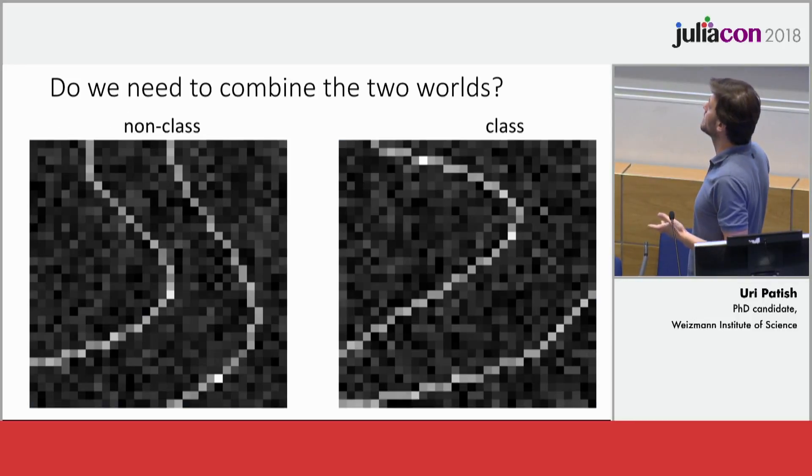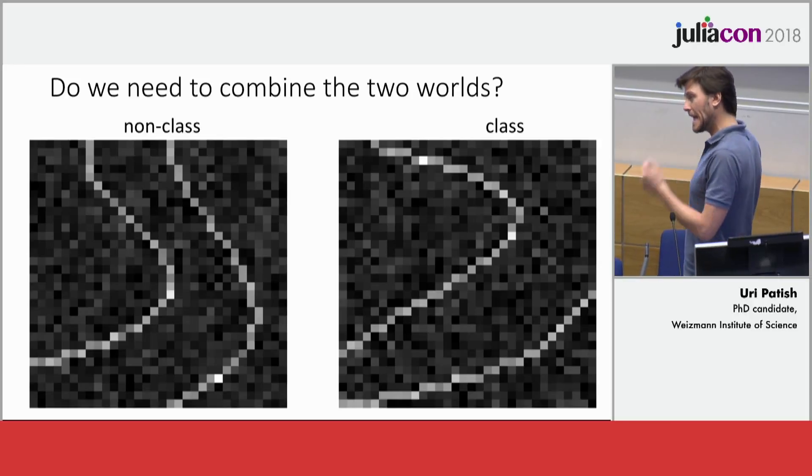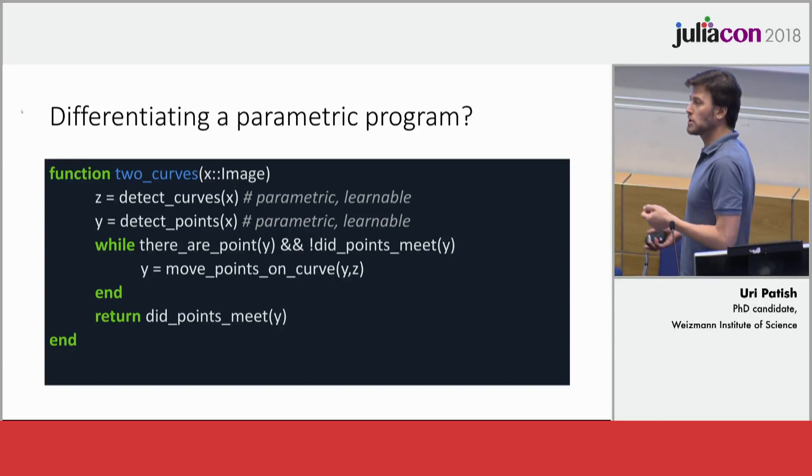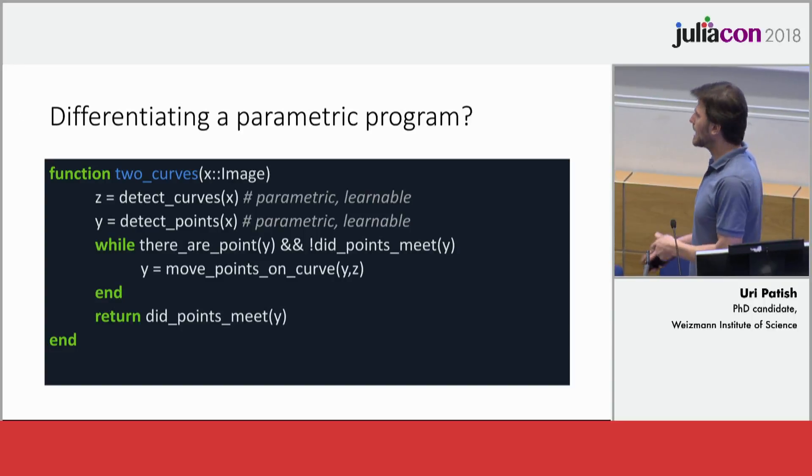But what happens if there's noise and I don't know how that noise behaves? In that case, I might want to take these two detection operations, make them parametric and learn the parameters using gradient-based learning. In such cases, we might want to do this combination.